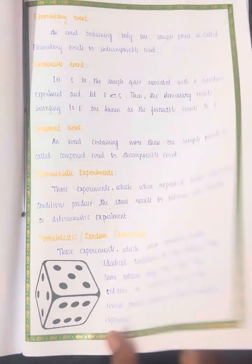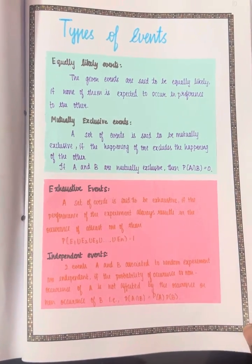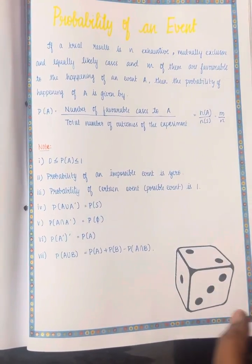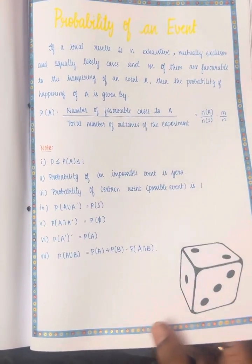Next, it defines different events and explains the types of events, followed by the probability of an event and all the conditions associated with it.